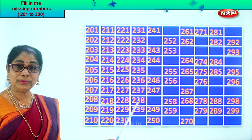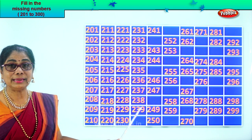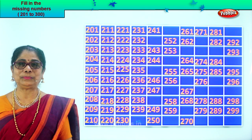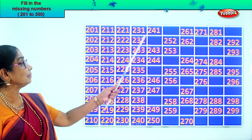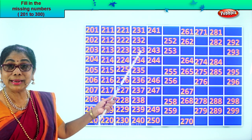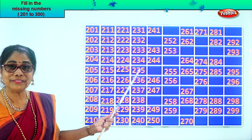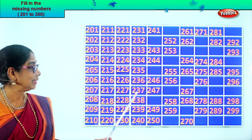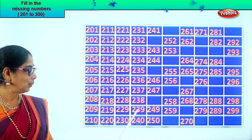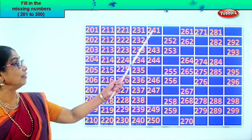237, 238, 239. After 9, 10. After 39, 40. 240. Good. 231, 232, 233, 234, 235, 236, 237, 238, 239, 240. After 240, 241.